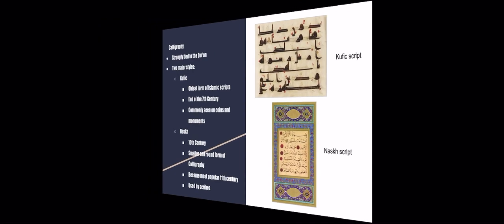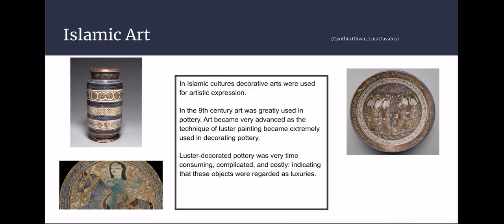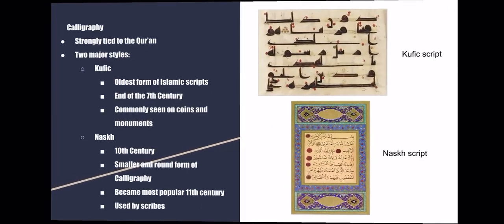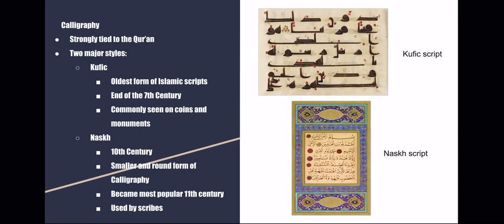Islamic calligraphy is heavily tied to the Quran, and both chapters and excerpts from the Quran are common subjects. There are two major styles. Kufic is the oldest form of Islamic script, created at the end of the 7th century, and is commonly seen on coins and monuments. Naskh was created in the 10th century; it is a smaller and more rounded form that became most popular by the 11th century and is commonly used by scribes.